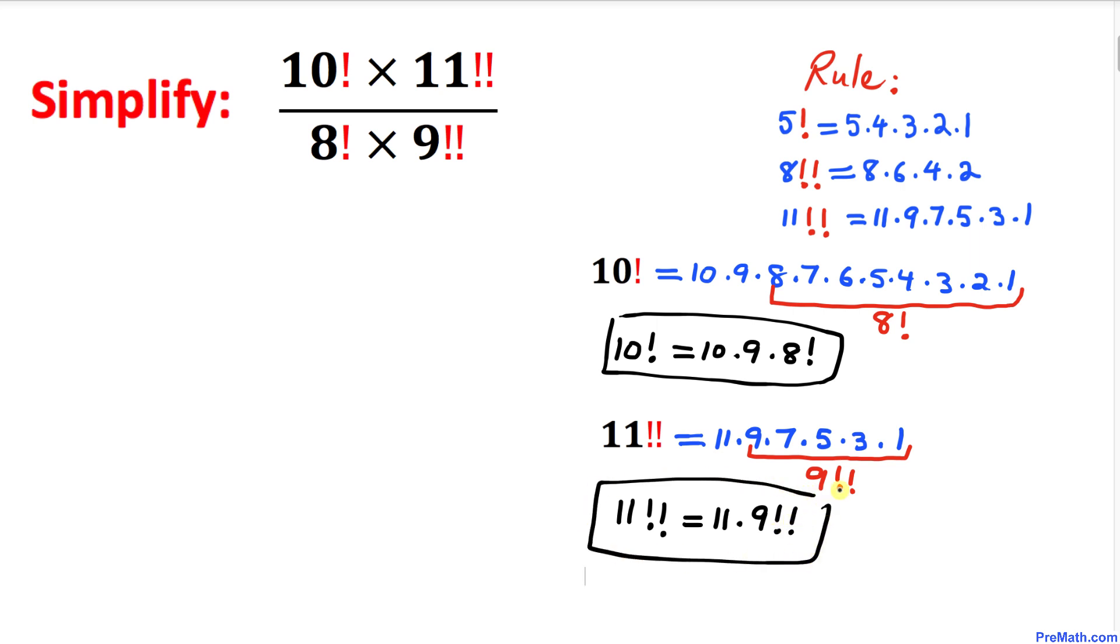Now let's go ahead and simplify our given problem. Let's focus on 10 factorial. I'm going to replace it, so I can write 10 factorial as 10 times 9 times 8 factorial, times 11 double factorial, which is 11 times 9 double factorial, divided by 8 factorial times 9 double factorial.